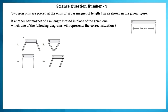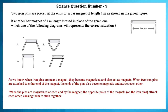Science question 9. Two iron pins are placed at the ends of a bar magnet of length 4 meters. If another bar magnet of 1 meter length is used in place of the given one, which diagram represents the correct situation? When iron pins are near a magnet, they become magnetized and act as a magnet themselves. When attracted to either end, the ends of the pins also become magnetic and attract each other — the opposite poles on the iron pins attract, causing them to stick together. So the answer is option B.